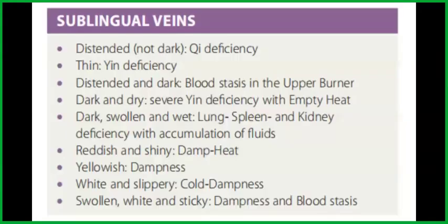Summary for sublingual veins in TCM: distended but not dark indicates qi deficiency; thin indicates yin deficiency; distended and dark indicates blood stasis in the upper burner; dark and dry indicates severe yin deficiency with empty heat; dark, swollen, and wet indicates lung, spleen, and kidney deficiency with accumulation of fluids; reddish and shiny indicates damp heat; yellowish indicates dampness; white and slippery indicates cold dampness; swollen and white and sticky indicates dampness and blood stasis.